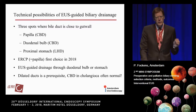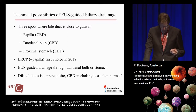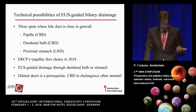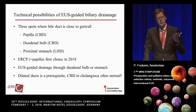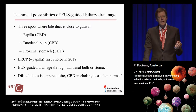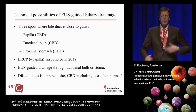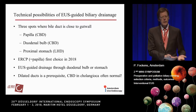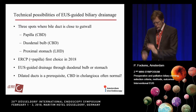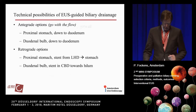For cholangiocarcinoma, you should go through the bulb or the stomach, but you need dilated ducts. If you go through the duodenal bulb into an undilated duct, the whole idea is that dilated ducts are easier to puncture. So the applicable scenarios are becoming smaller and smaller.